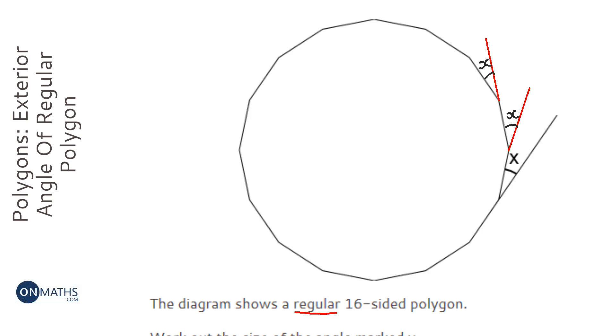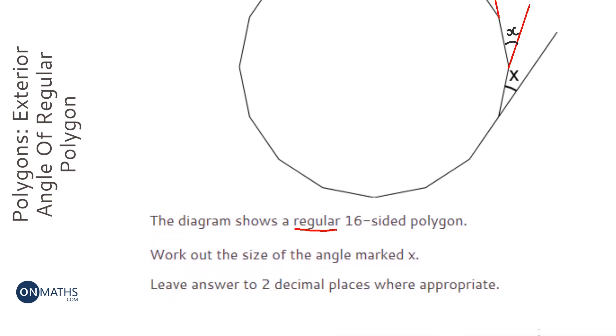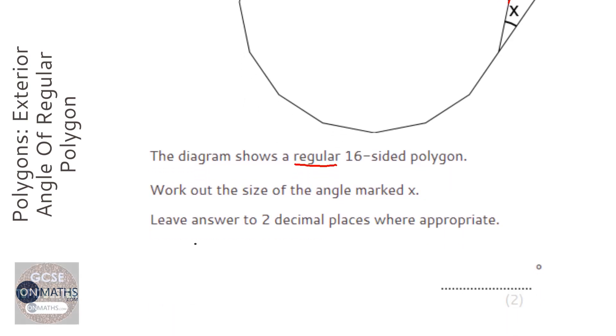Now the one thing we know about exterior angles is they always add up to 360. So to find out what that angle is, we just get 360 and we divide it by 16, because there's 16 identical exterior angles. So I get my calculator out, 360 divided by 16 equals...